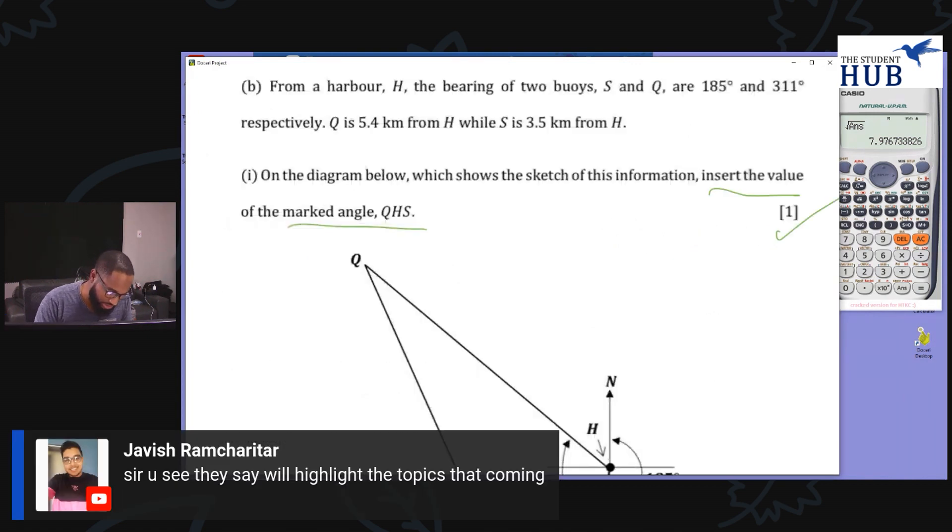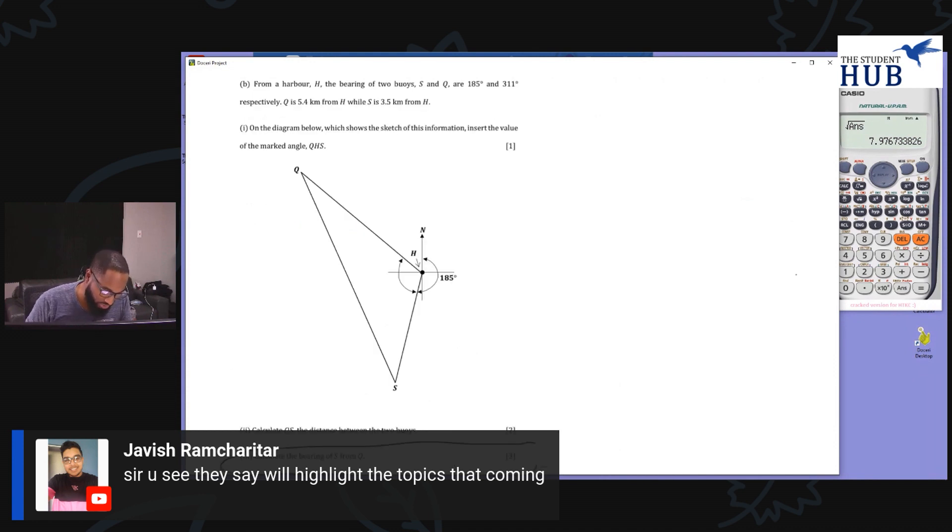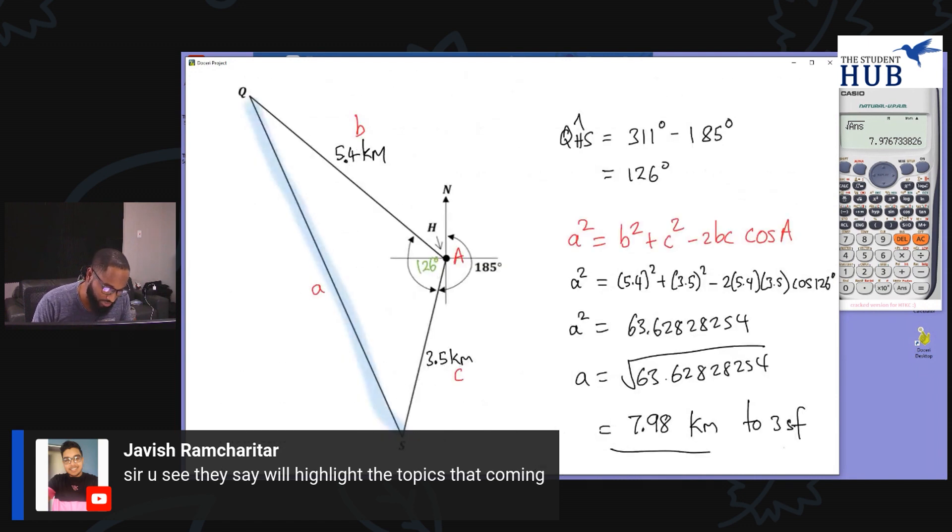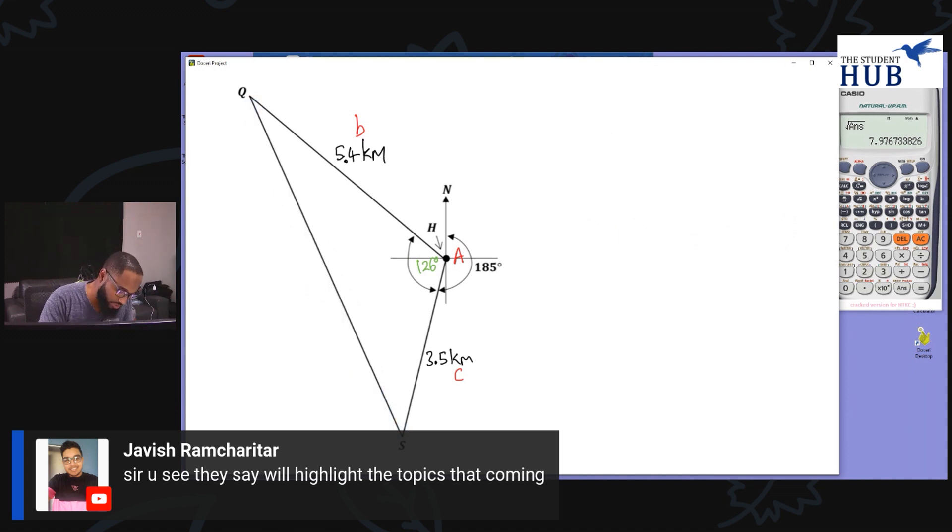So the next part of this question is the toughest part. Calculate the bearing of S from Q. Let's go to the diagram. The bearing of S from Q, if I draw the line that indicates north, it will go like this, and the bearing of S from Q is this angle we're looking at here. You take the bearing from the north, go down to the line that's pointing towards Q.